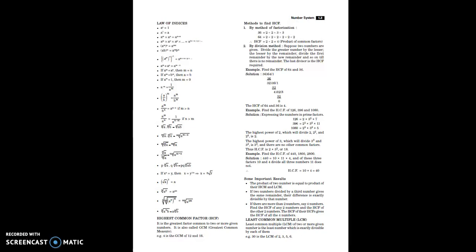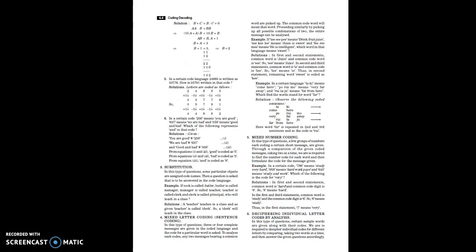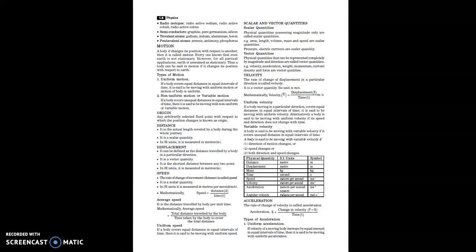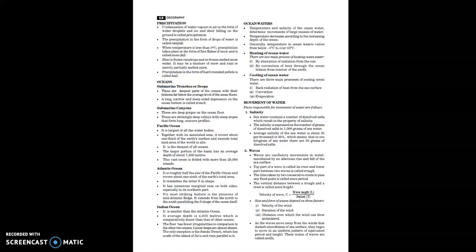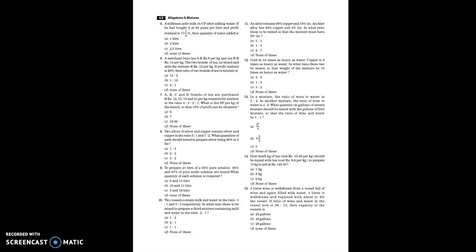So number system - this is the theory part of CBT-1. Number system, law of indices, highest common factor, least common multiple. This is the theory part of coding decoding. We have taken a single page of every chapter so you can look into this. Physics is there, chemistry theory part, biology theory part, geography theory part, allegations and mixtures. These are the questions that we have included.